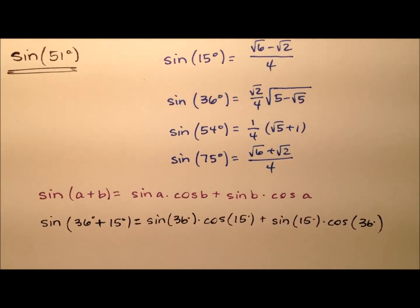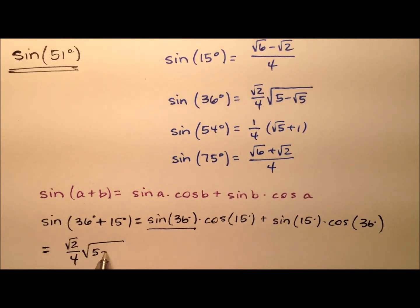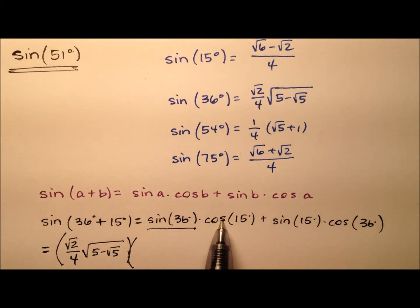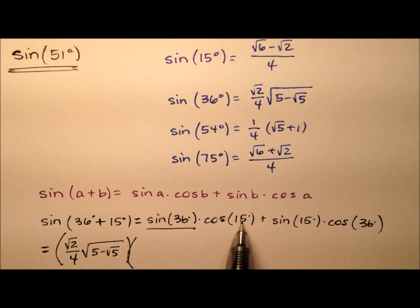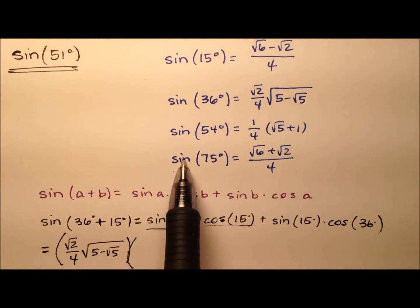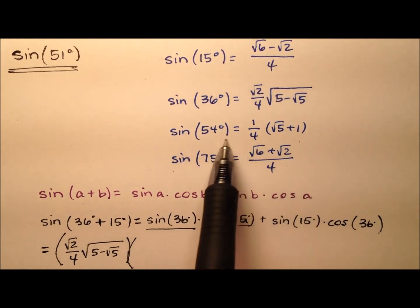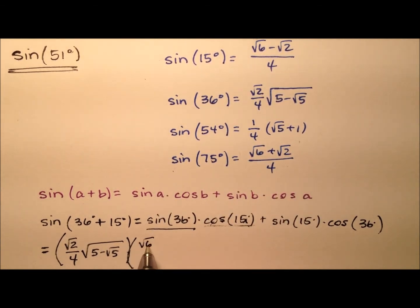So the sine of 36 degrees is written right here — we have the square root of 2 over 4, multiplied by a square root expression, and then we multiply by the cosine of 15 degrees. You'll see that sine and cosine have a nice relationship: the cosine of one angle is identical to the sine of the complement of that angle. Complementary angles add up to 90 degrees. So instead of the cosine of 15 degrees, since 15 and 75 are complementary, the cosine of 15 degrees equals the sine of 75 degrees — so I'll go ahead and put that value in right here.